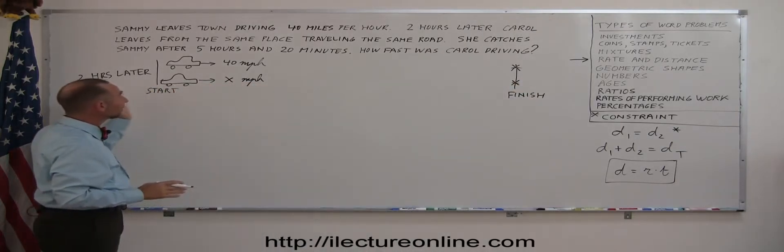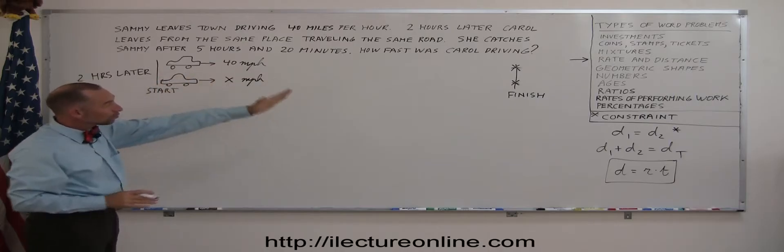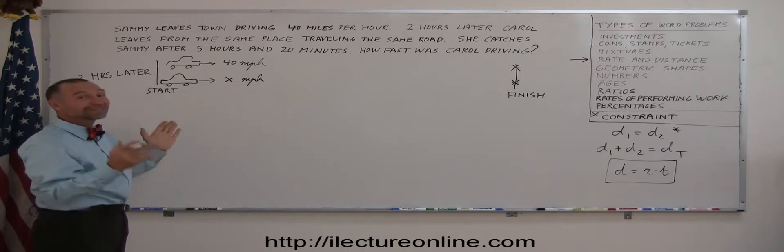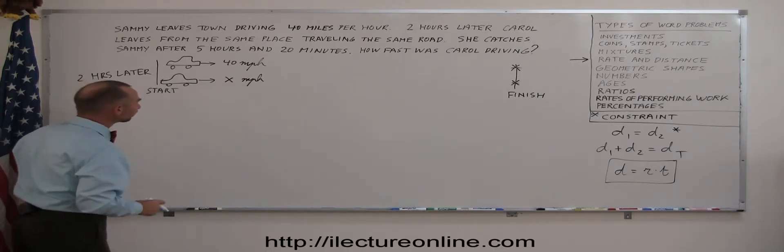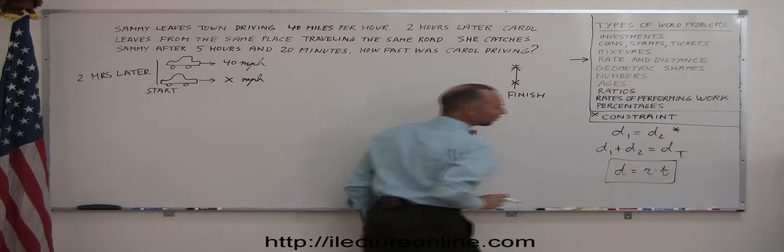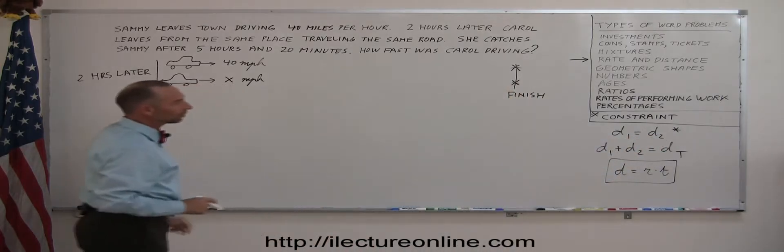You can see that in this case, both of them drive the same amount of distance. However, Carol drives faster and takes less time to get there. So that's why this equation here, this approach to the problem really works. They both travel the same distance.